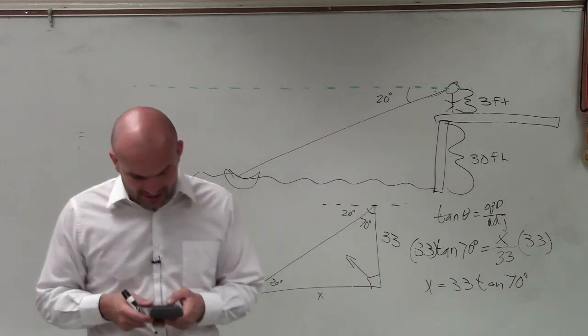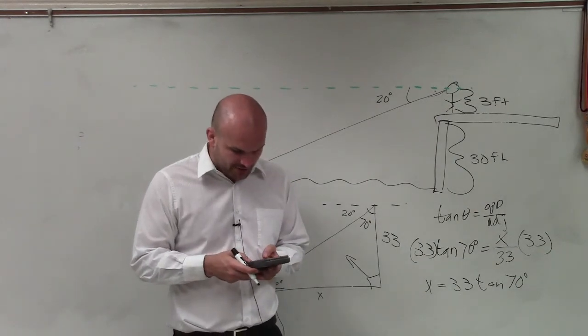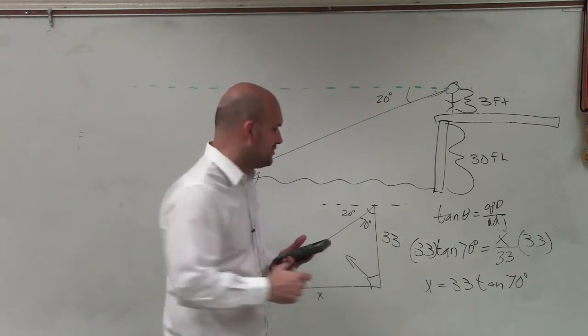Make sure that your calculator is in degree mode. If you don't know how to check that, let me know and I'll help you. Then just do 33 times the tangent of 70 degrees, which is 90.66.